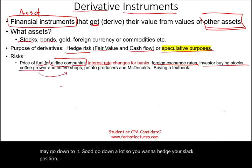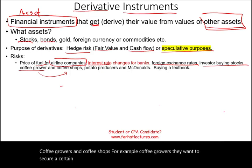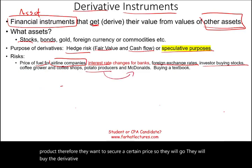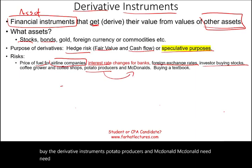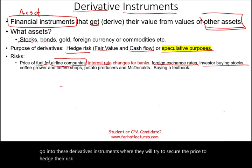Coffee growers want to secure a certain price for their product, and coffee shops want to buy it at a predictable price — so both sides buy derivative instruments. Similarly, potato producers and McDonald's, which needs potatoes for french fries, go into these derivative agreements to try to secure prices and hedge their risk.